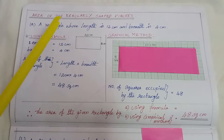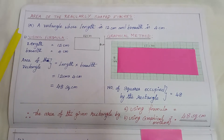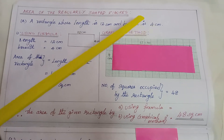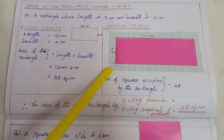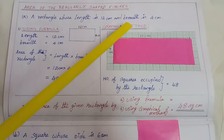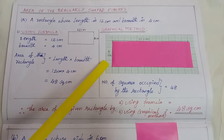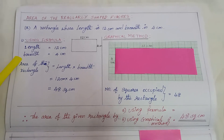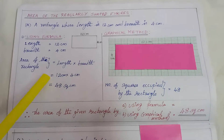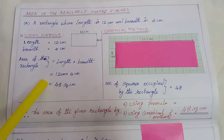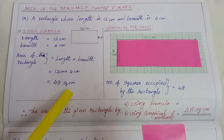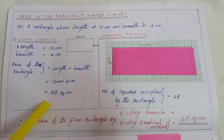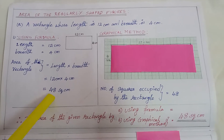Area of regularly shaped figures. First one: a rectangle whose length is 12 cm and breadth is 4 cm. Here I have drawn a rectangle with 12 cm length and 4 cm breadth. By using the formula, the area of the rectangle is equal to length into breadth. Therefore, 12 into 4 is equal to 48 square cm.